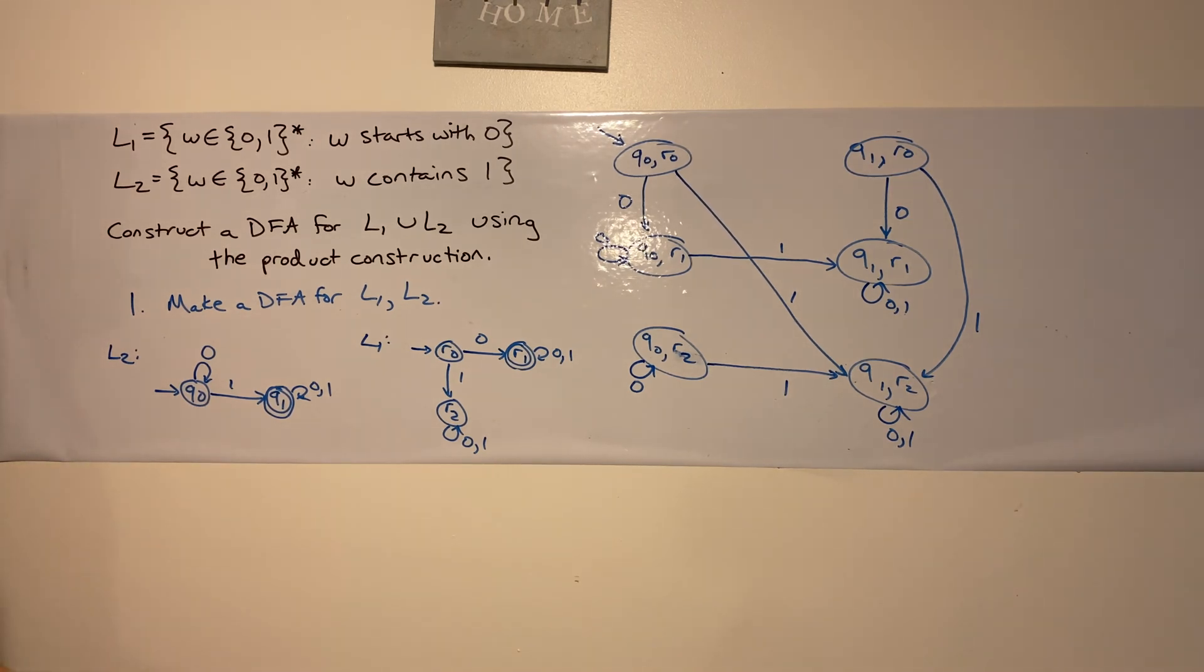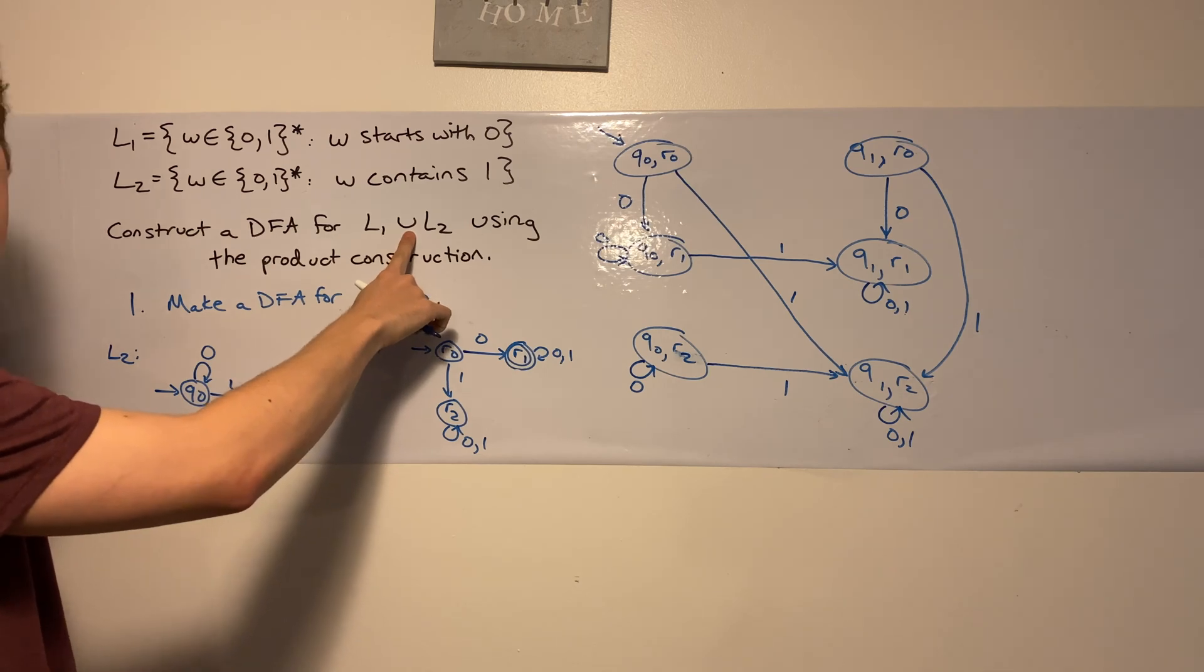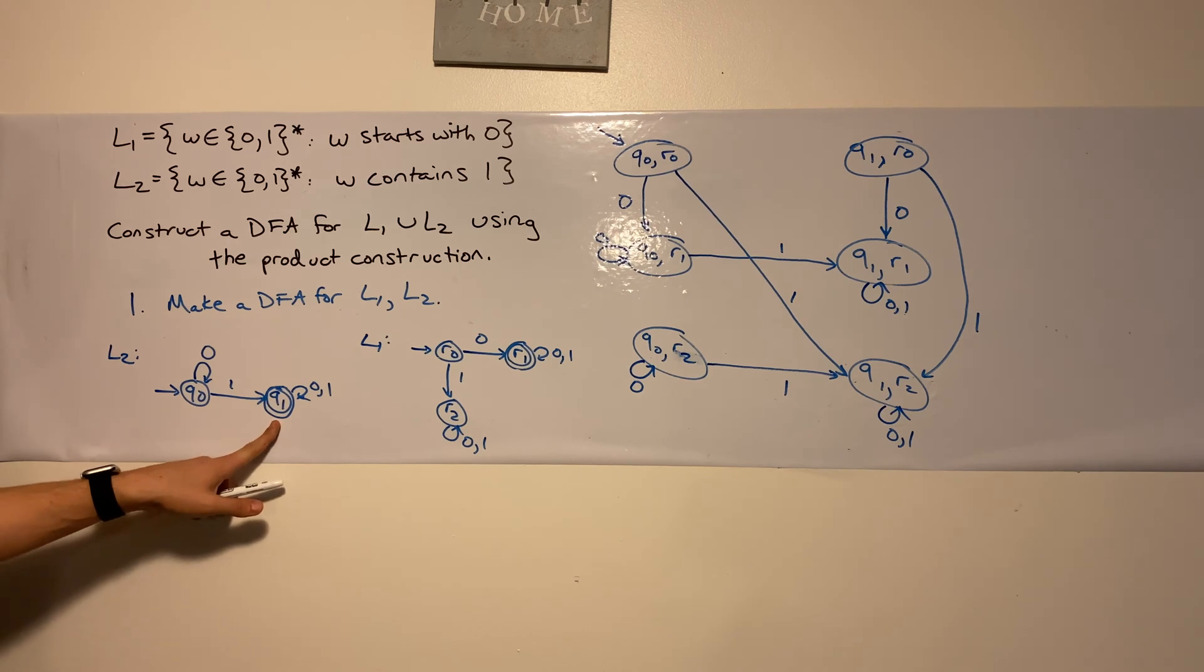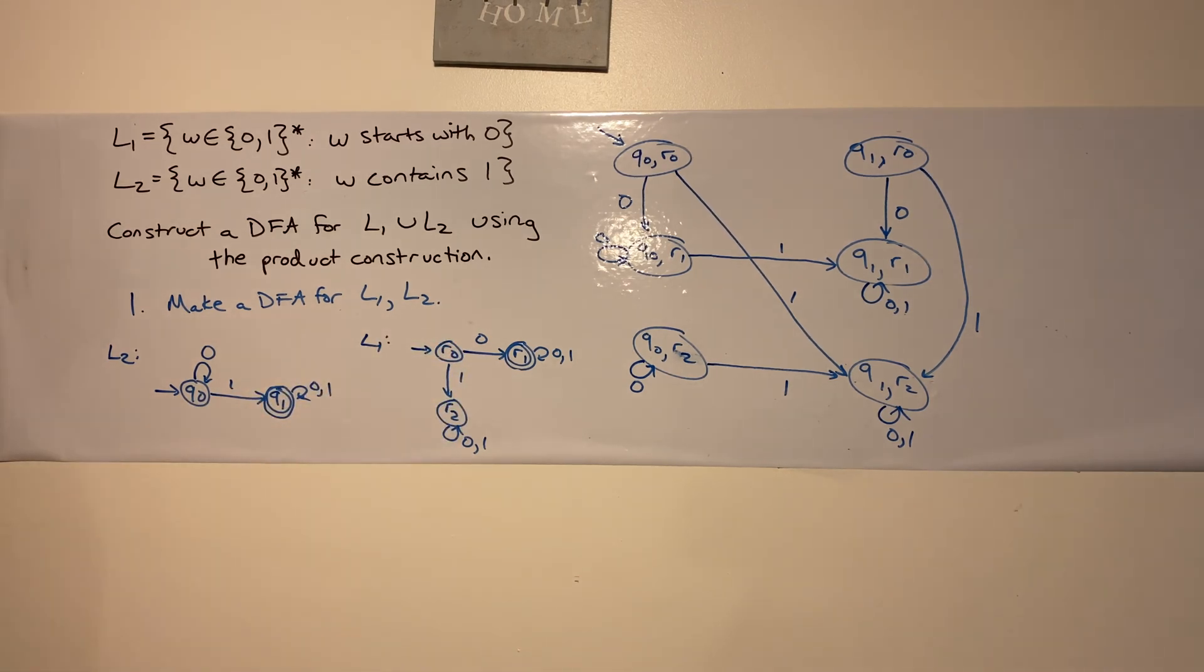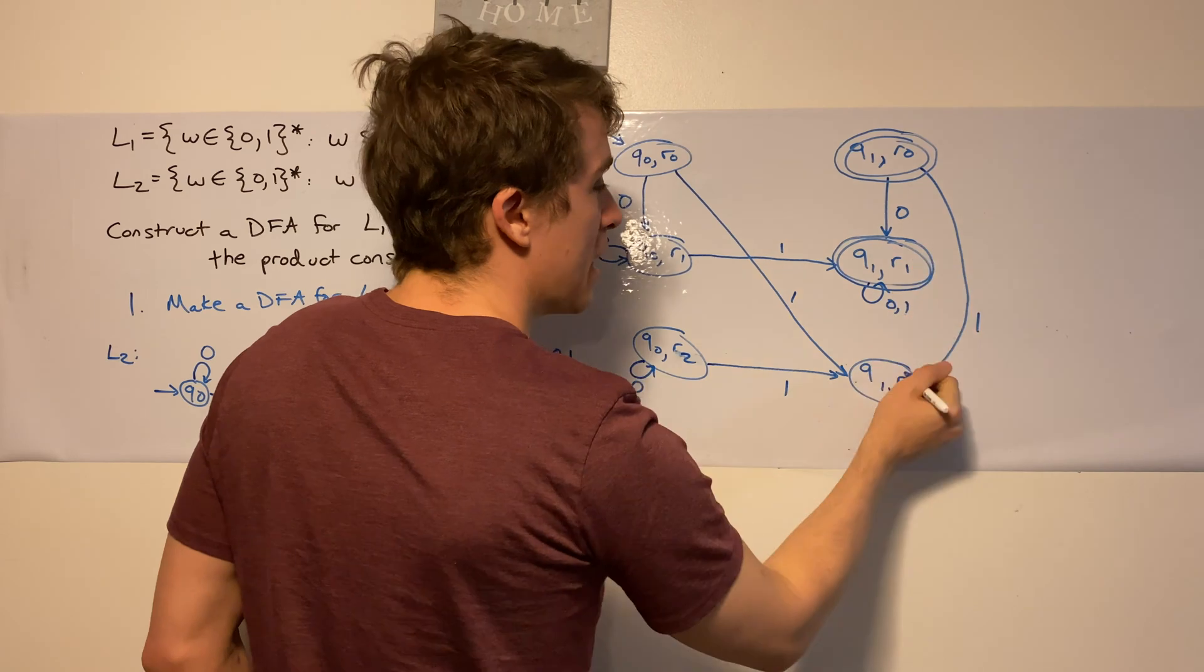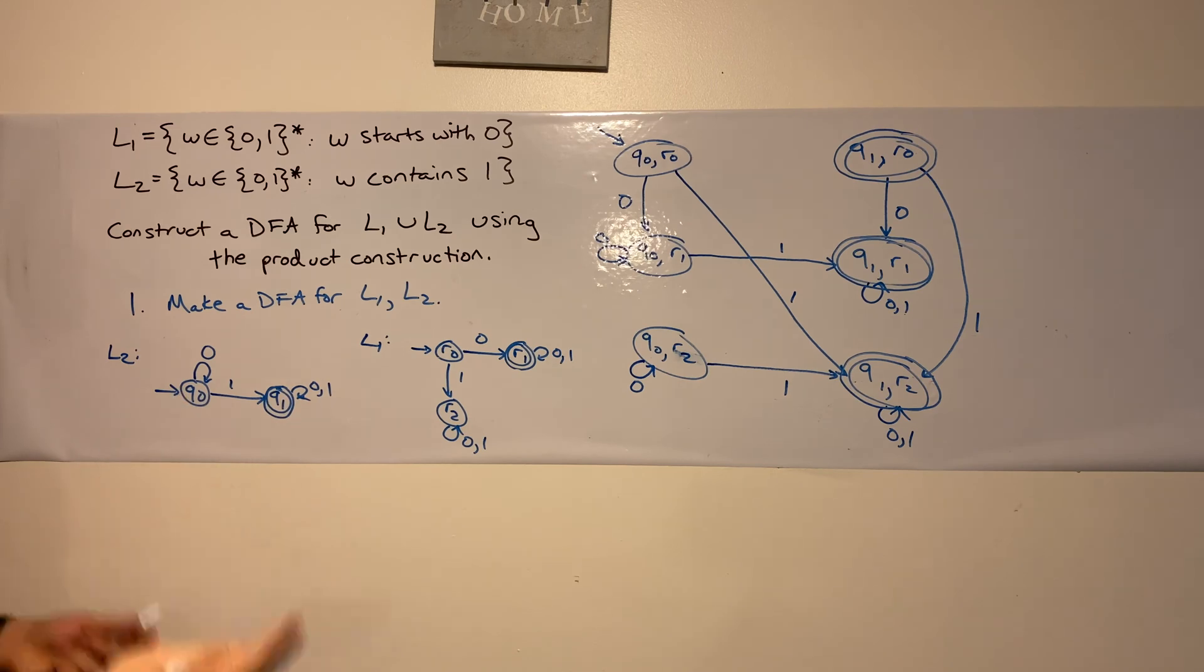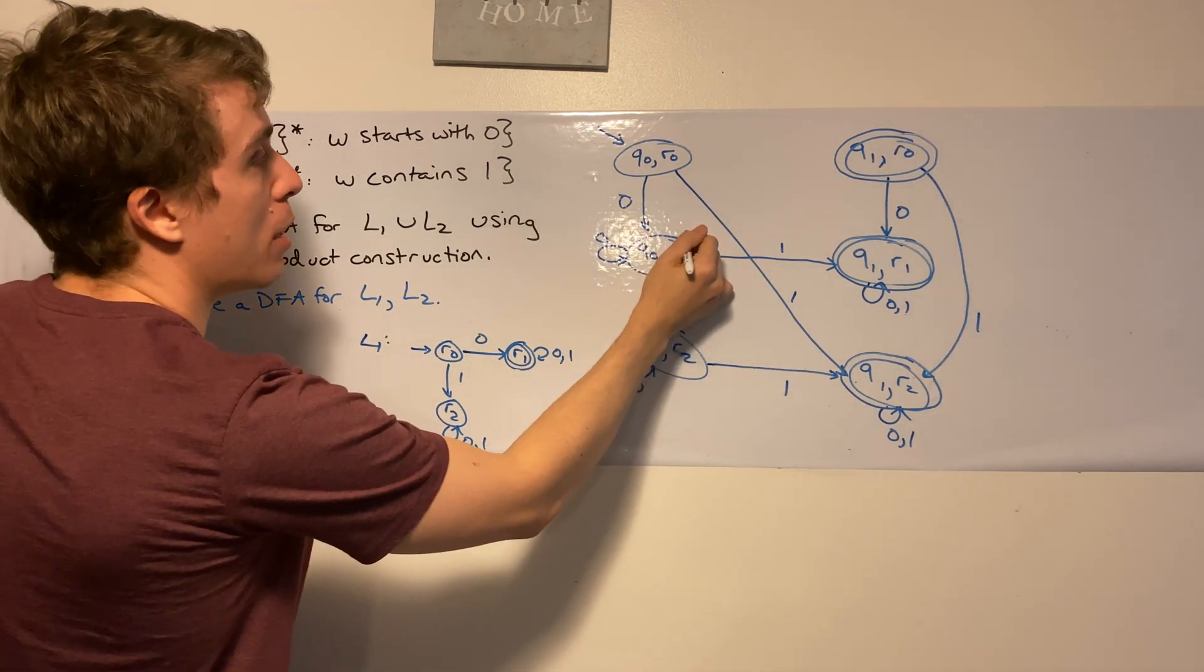The only thing that's left is to do the final states. What are the final states here? Notice we're doing union of the two languages. If we happen to be in q1, because we're doing union, I don't care what the other machine was in. As long as I'm in q1, that is a final state. So these three states on the right are going to be final states. And a similar argument for r1. If I'm in r1, I don't care what the other machine's in because it's in the union. So every state with an r1 in it is a final state, which the only one left is this one.